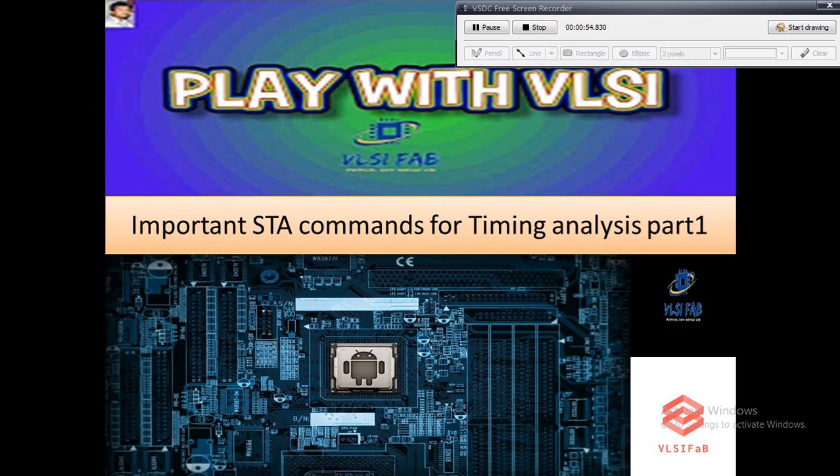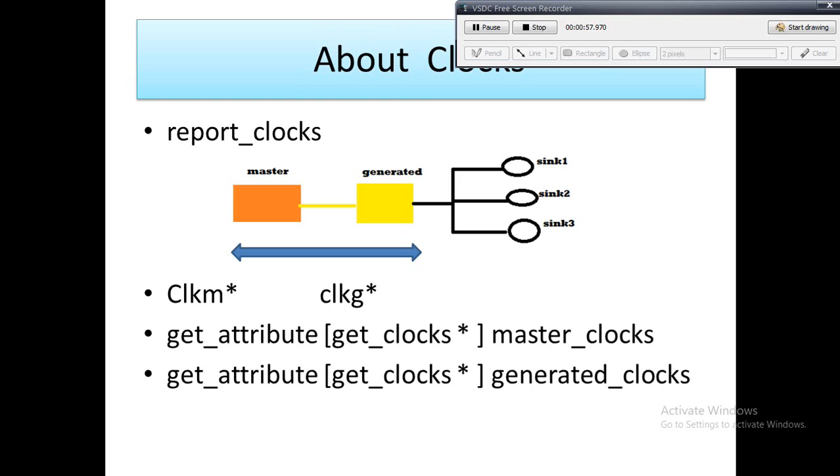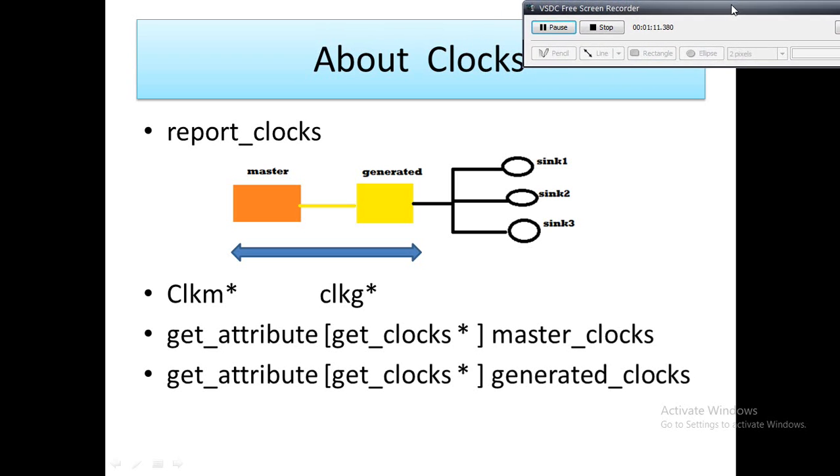Let's start the video without wasting time. So before going to learn debugging or tracking tricks, let's check how to get the basic info of clocks. Report_clocks will help you. This will give you the master and generated source both. Always remember in the naming convention itself, the master clock will come like CLKM, then generated will be like CLKG. So in the naming convention you can identify, and as you can see in the diagram, report_clocks will cover the blue section - master to generated info you will get from the report_clocks.